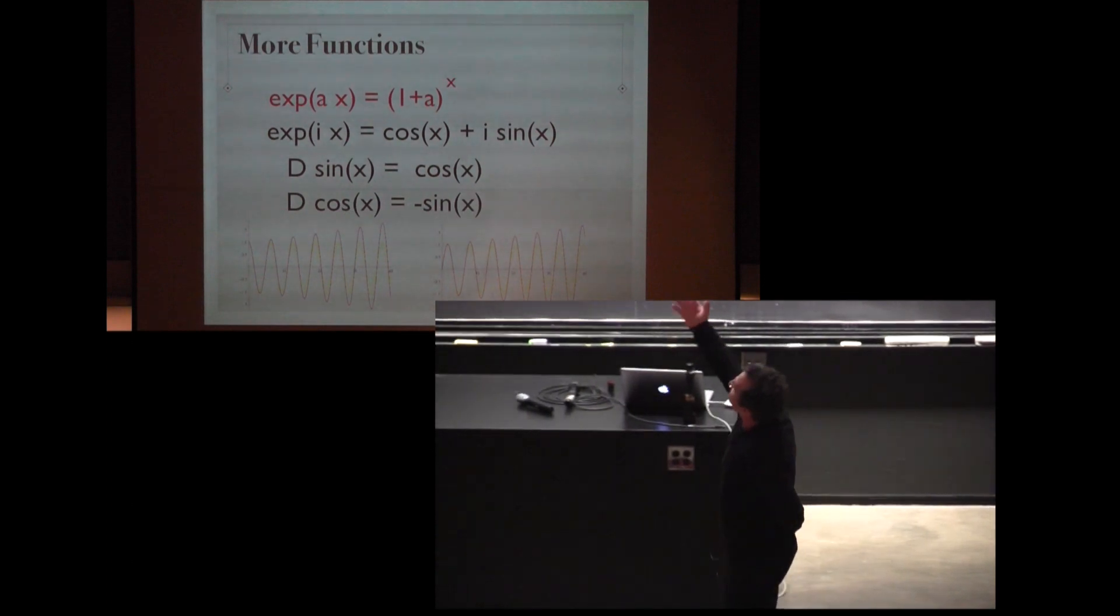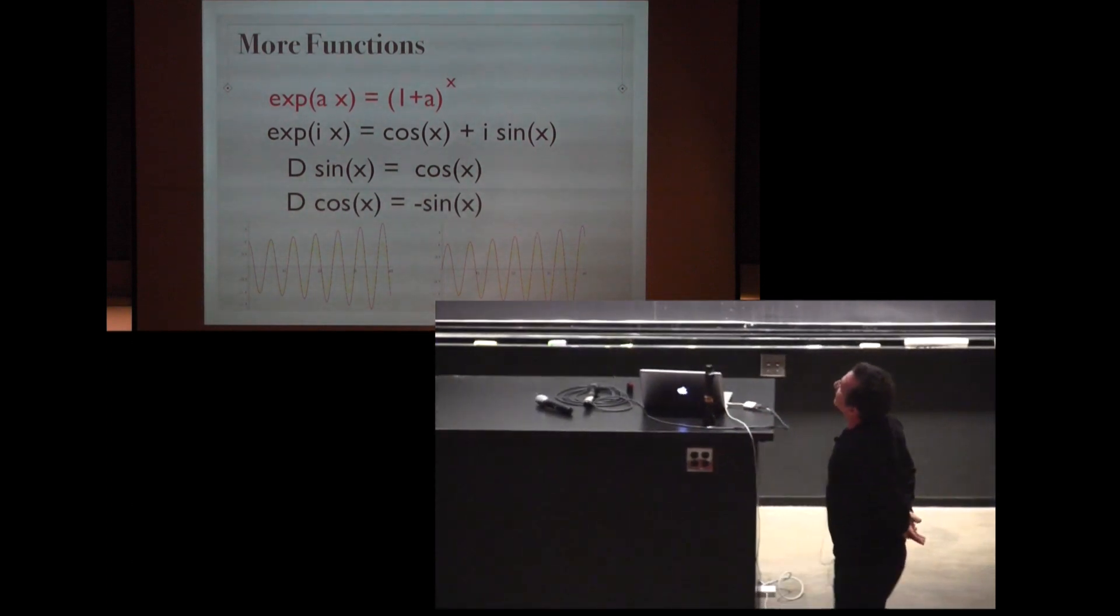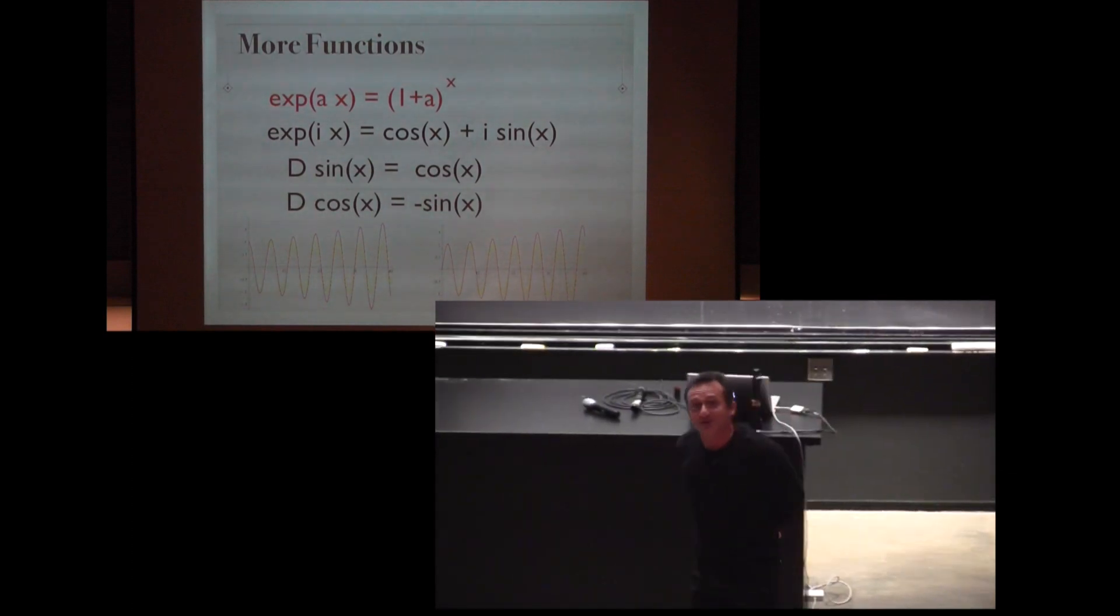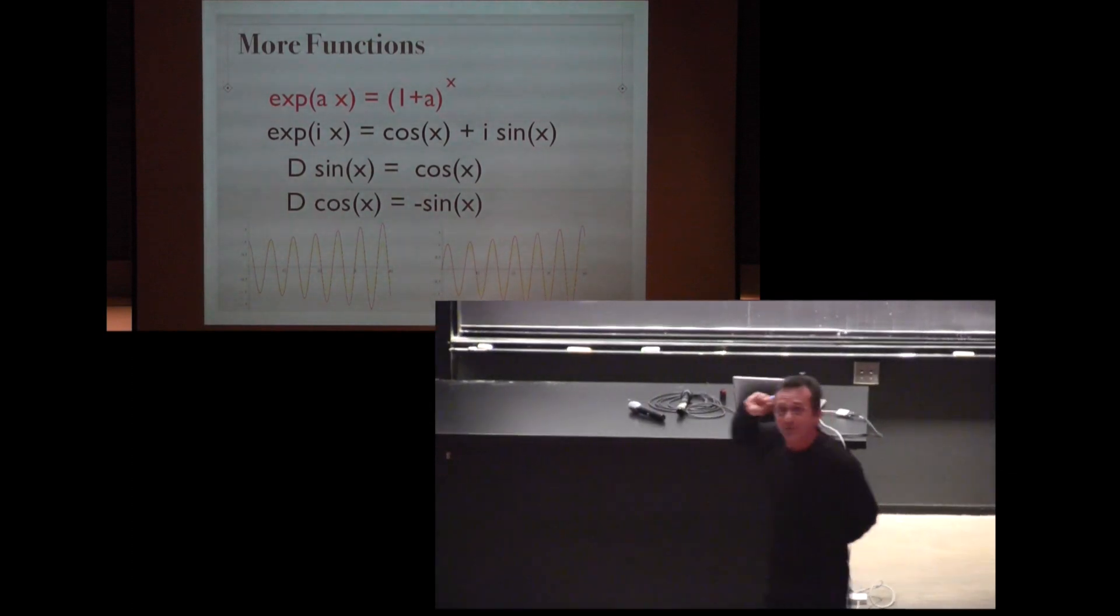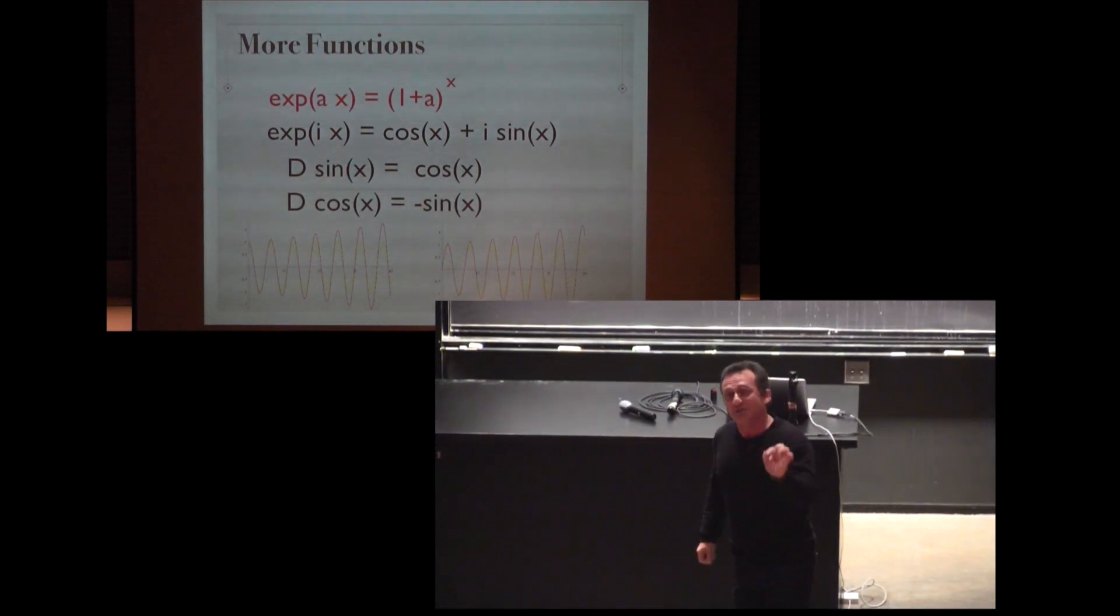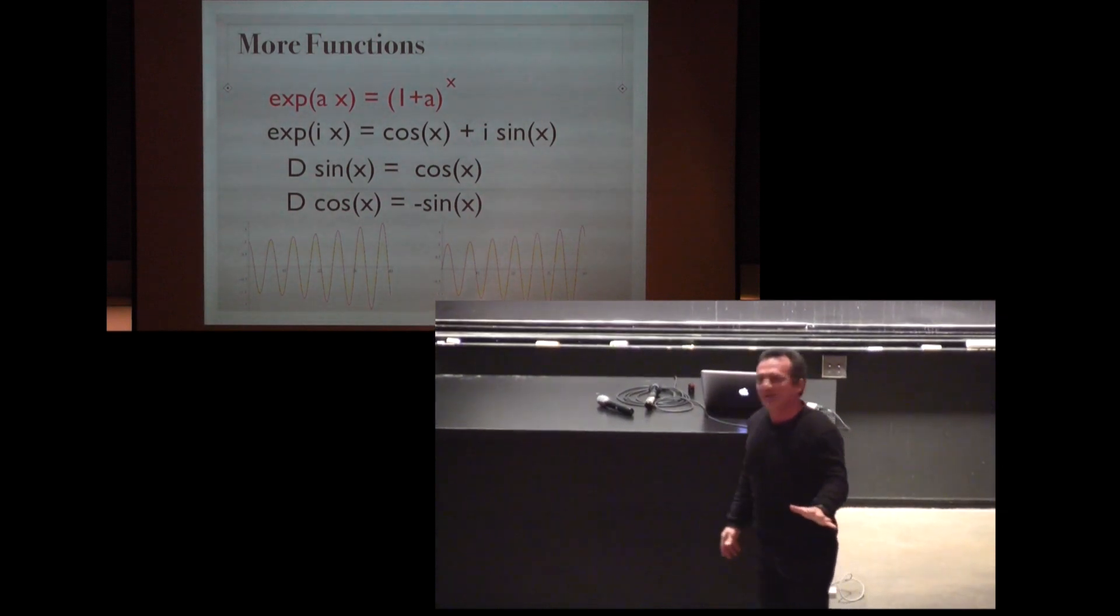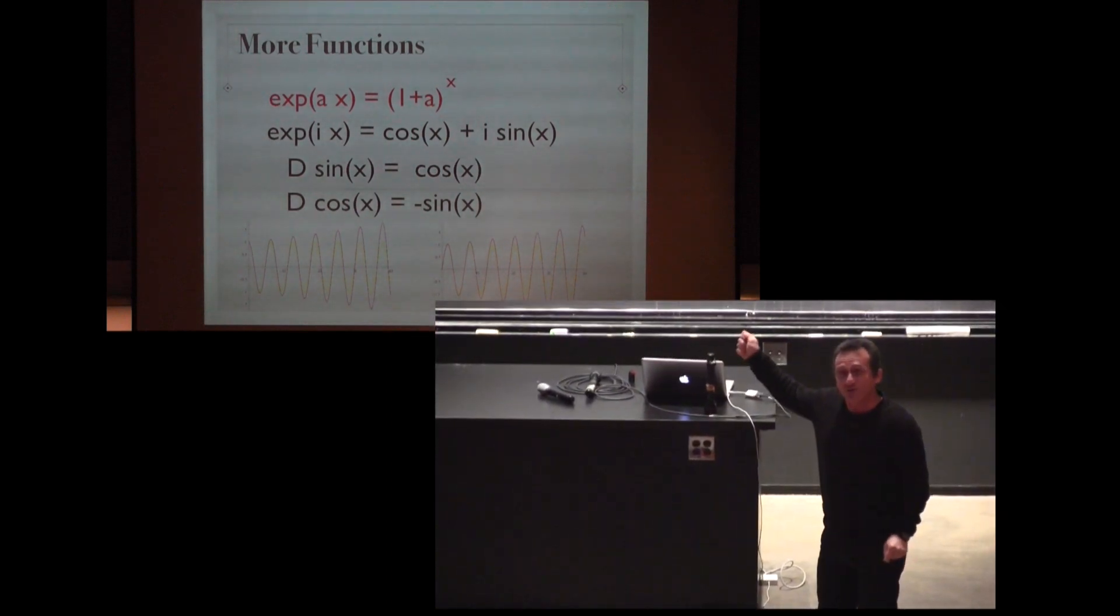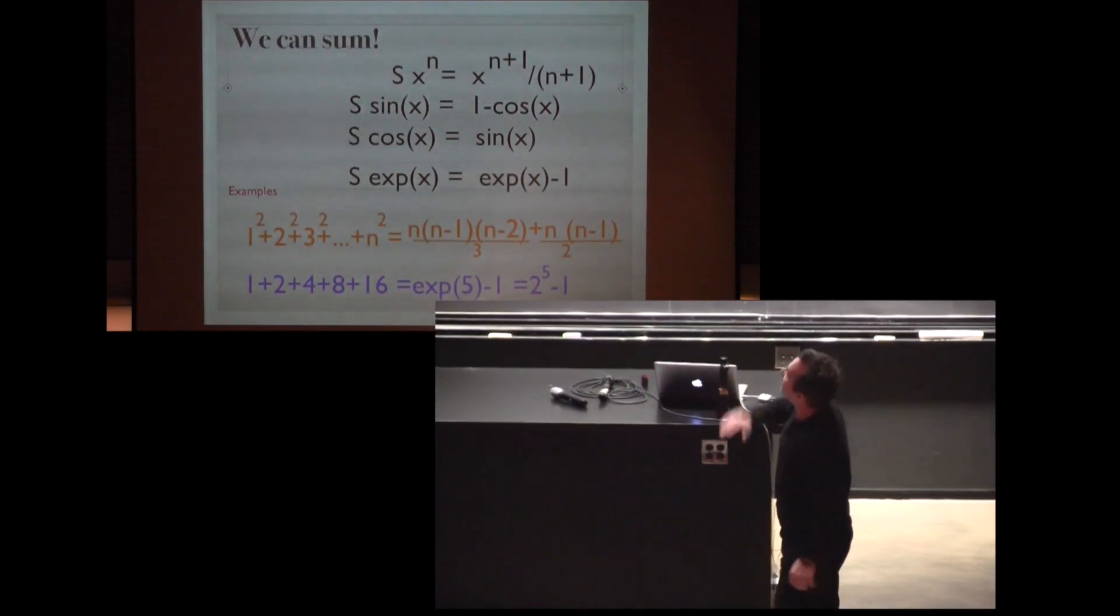We can even get more functions like we have already seen the exponential function. If you take an imaginary interest rate we get as the real and imaginary part we get the cosine and sine. That's the definition. And immediately we get the result that the derivative of sine is cosine and the derivative of the cosine is sine. These are the deformed functions. They are not the functions we are familiar with but very close.